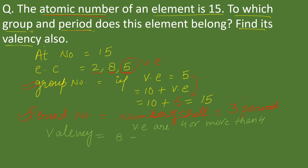Valency is equal to 8 minus valence electron. Here valence electrons are 5, so its valency is equal to 8 minus 5, which is equal to 3.